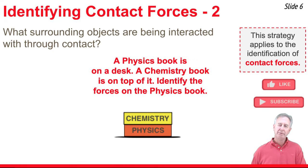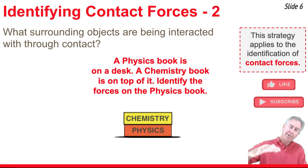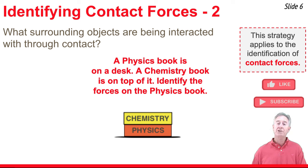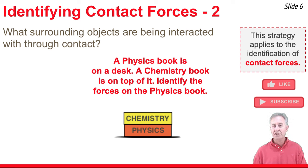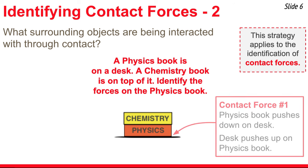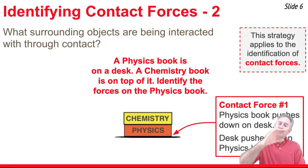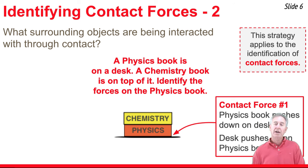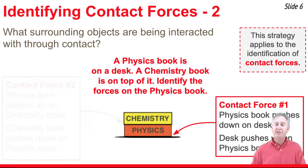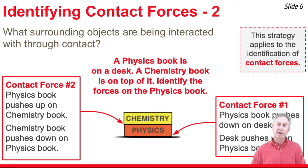Our second example is very similar. A physics book is at rest on a desk, but this time there's a chemistry book on top of the physics book. To identify contact forces on the physics book, we ask what it's touching — two things. It's touching the desk underneath it, so the physics book pushes down on the desk and the desk pushes up on the physics book. That's the first contact force. The chemistry book on top pushes down on the physics book, and the physics book pushes up on the chemistry book — that's the second contact force.